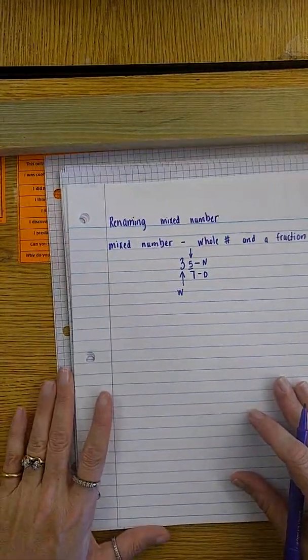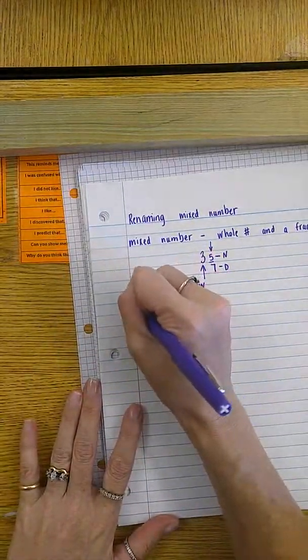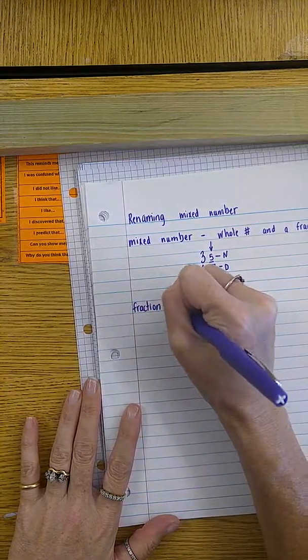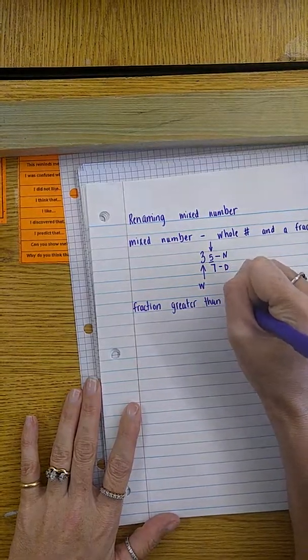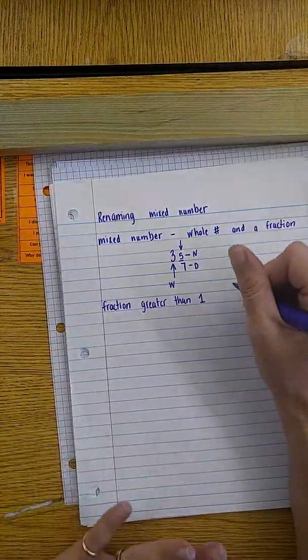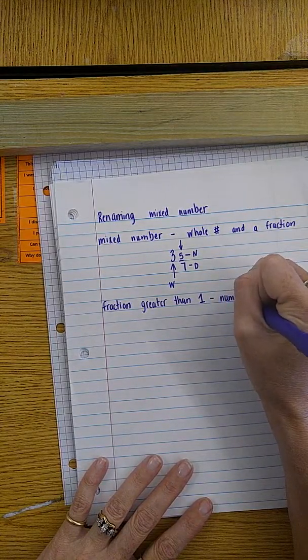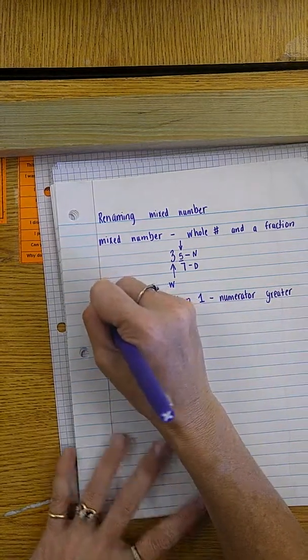So we worked on two things. We went from renaming a mixed number to a fraction greater than one. And let's get that vocabulary out there. Fraction greater than one, which is a numerator that is bigger than a denominator. So your numerator is greater than denominator.